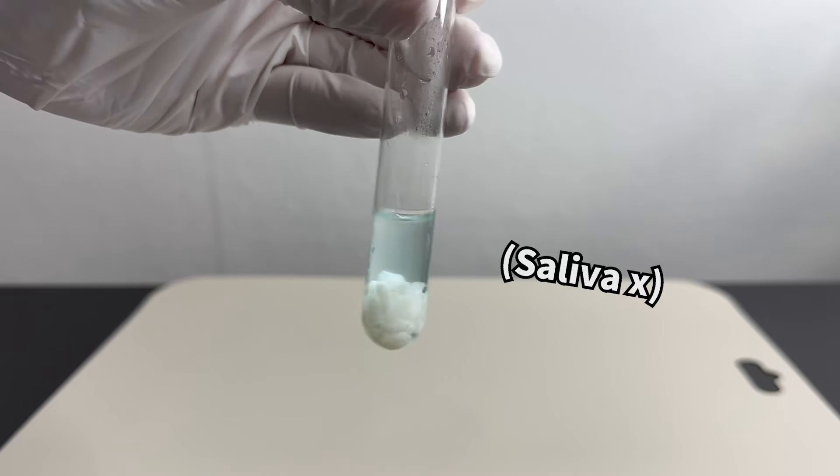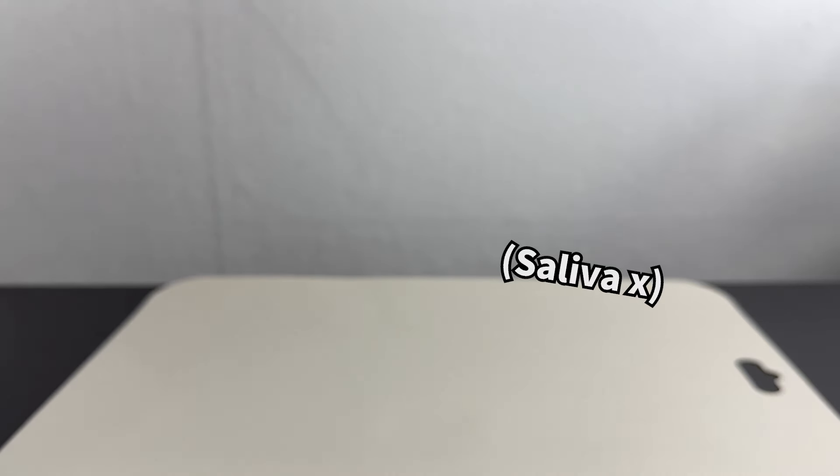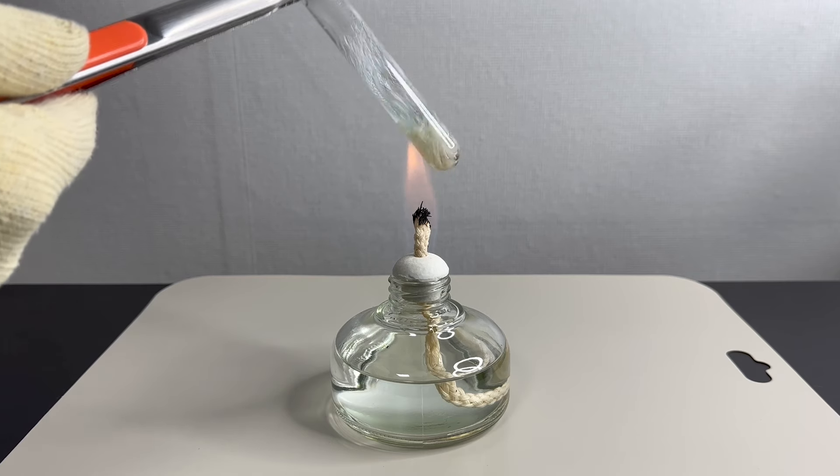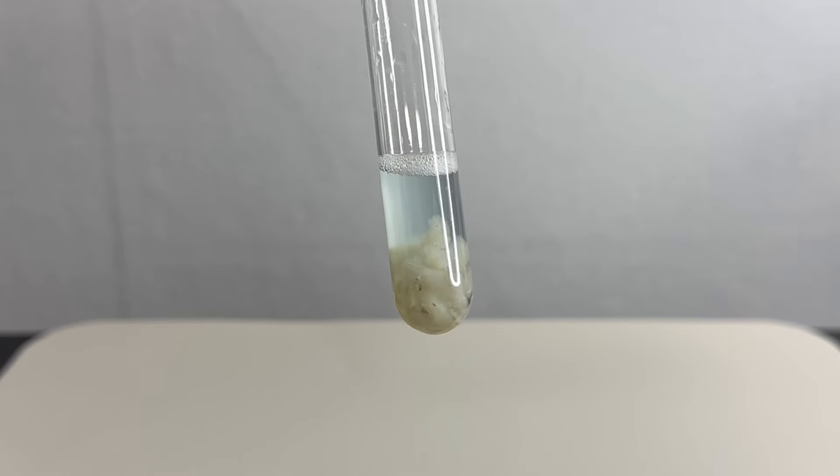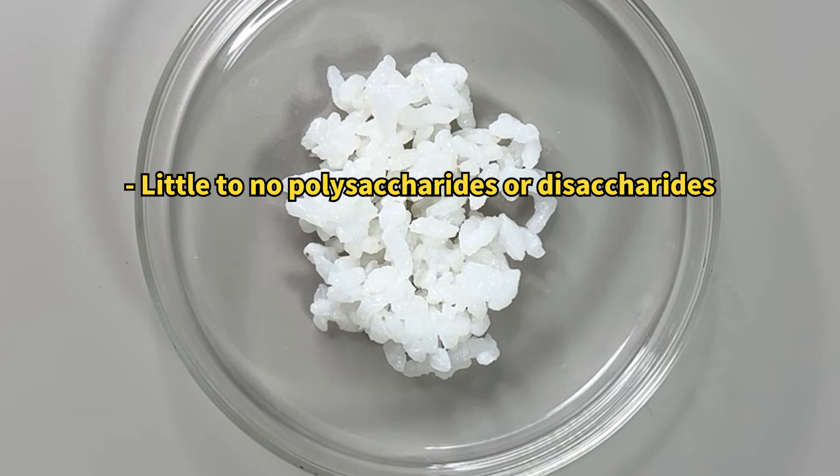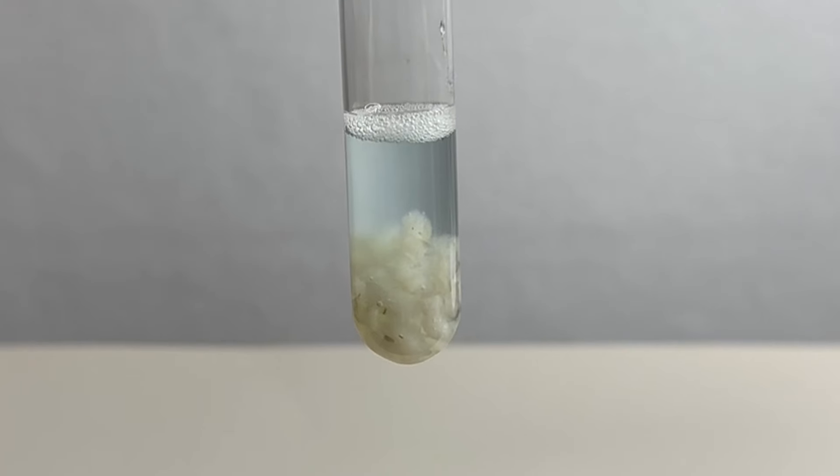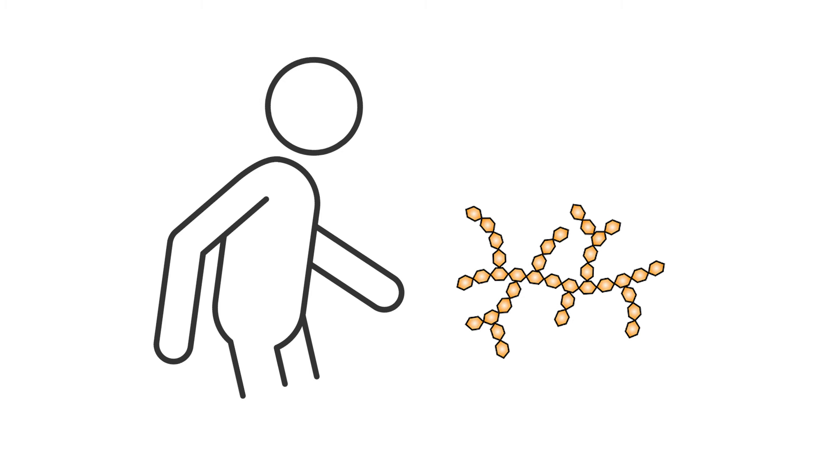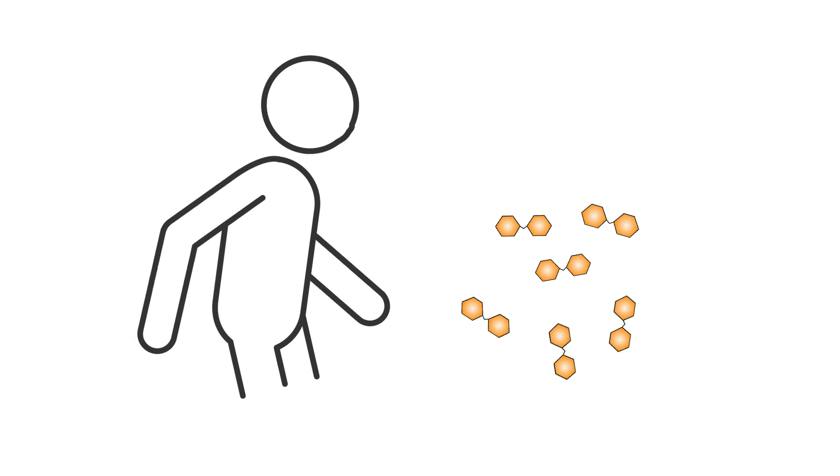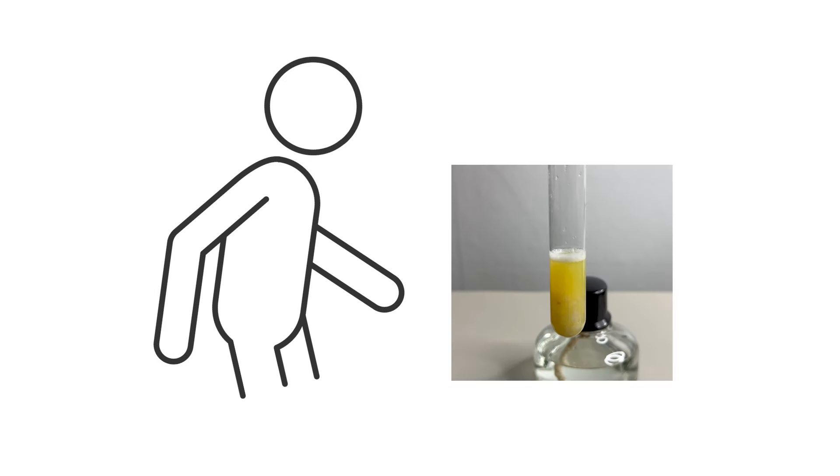For comparison, when we mixed rice grains with distilled water and Benedict's reagent, there was almost no color change, showing no reaction. Since the primary component of rice is starch, the reaction was minimal. However, with human saliva, the amylase broke down the starch into sugars, causing the Benedict's reagent to react.